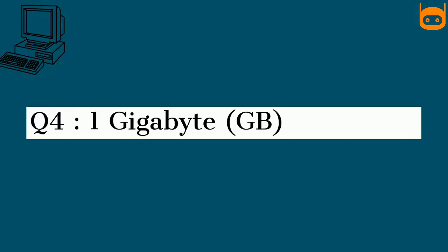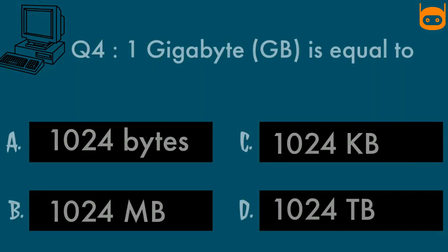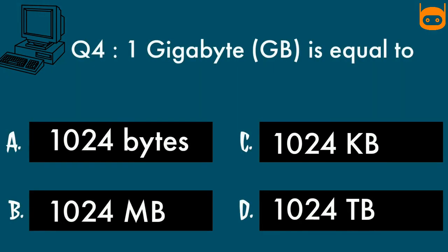Our fourth question is: One gigabyte is equal to? Option A, one thousand twenty four bytes. Option B, one thousand twenty four megabytes. Option C, one thousand twenty four kilobytes. Option D, one thousand twenty four terabytes. Your time starts now.